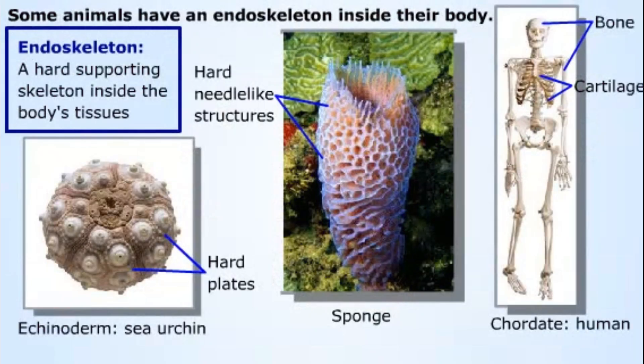Some animals have a hard, supporting skeleton within the tissues of their body. This type of skeleton is known as an endoskeleton. You might be surprised to learn that a sponge has an endoskeleton. Hard, needle-like structures made of fibrous, inorganic material help reinforce the sponge's shape. The sponge's endoskeleton is all that remains in the familiar bathroom sponge.